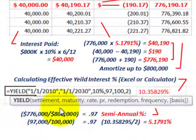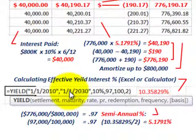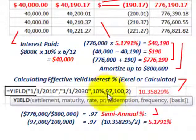For the Excel function, it's the YIELD function, and we have to put in these quantities. We need the settlement date — that's the date the bond was issued or purchased — which is 1-1-2010. Then the maturity date: since it's a 20-year bond, it matures at 1-1-2030. Then we need the interest rate, 10% — that's the stated rate. We also need to enter the purchase price and the redemption price, or maturity value, in terms of 100.